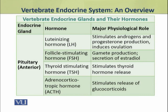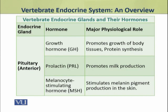The third tropic hormone is thyroid stimulating hormone (TSH), also called thyrotropin, which stimulates the thyroid gland to produce its hormone. The fourth hormone is adrenocorticotropic hormone (ACTH), which stimulates the release of corticosteroids from the adrenal cortex. The anterior pituitary gland also produces three non-tropic hormones: growth hormone, prolactin, and melanocyte stimulating hormone. They promote growth, promote production of milk, and stimulate melanin pigment, respectively.